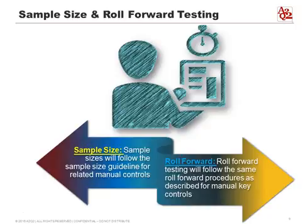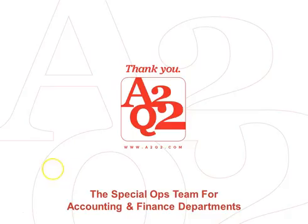That's it on spreadsheet testing — how to scope key spreadsheets in or out, how to classify them based on their materiality and complexity, and then based on the high, medium, or low classification, how the amount of work increases for high risk and decreases for low risk. The sample size follows manual controls. I hope you find this helpful, and we'll talk to you next time.